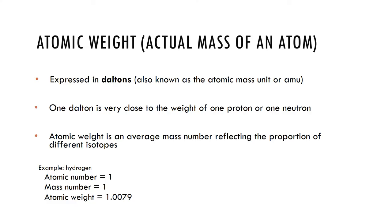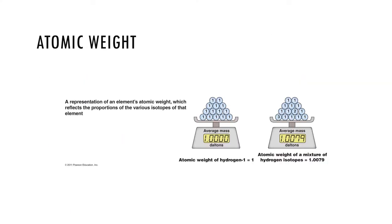The actual mass of an atom is expressed in Daltons. One Dalton is very close to the weight of one proton or neutron. The atomic weight is the average mass number reflecting the proportion of different isotopes. For example, hydrogen has an atomic number of one and a mass number of one, but its atomic weight is slightly more than one, reflecting its different isotopes.